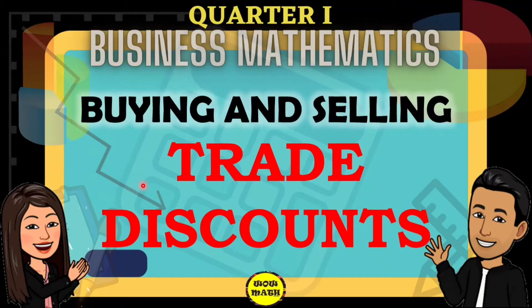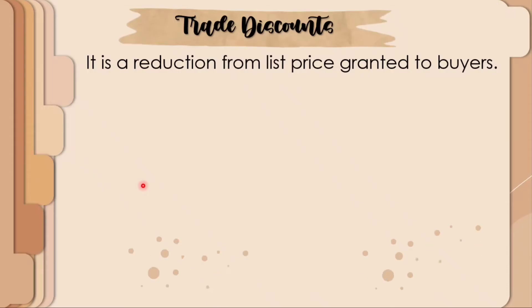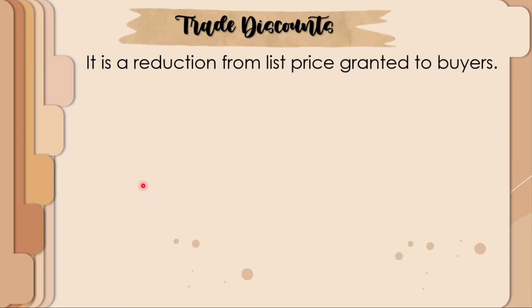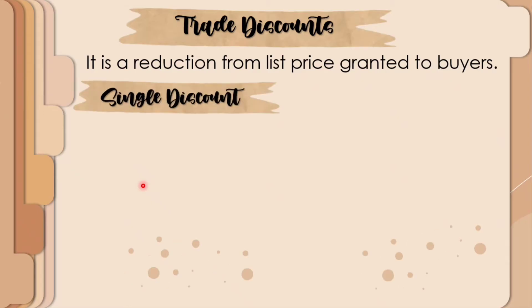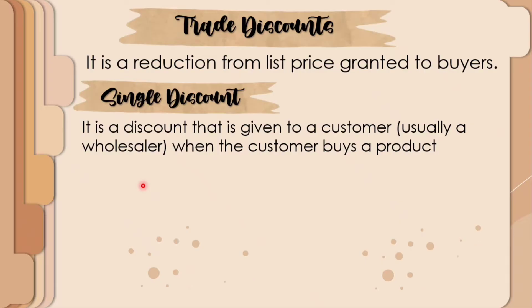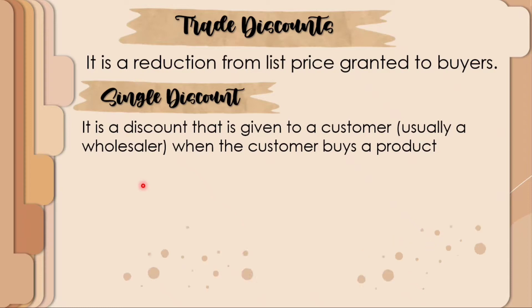Hello! In this video lesson, we will discuss trade discounts. First, let us define what is a trade discount — it is a reduction from the list price granted to buyers. A single discount is a discount given to a customer, usually a wholesaler, when the customer buys a product.